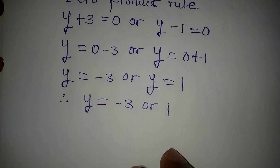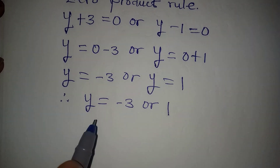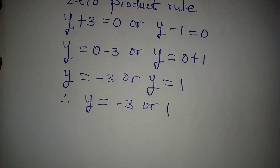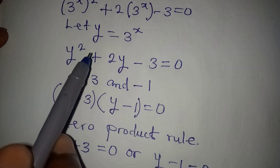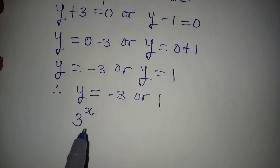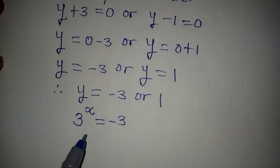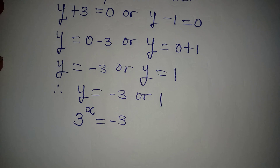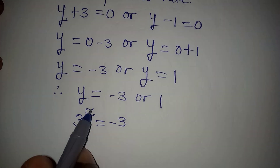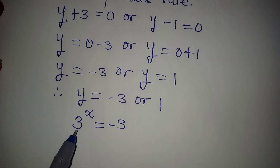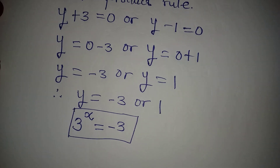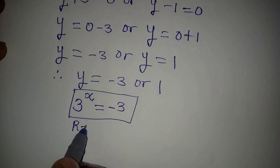I said I will check if these two values satisfy the equation, but we didn't have y in the original equation. Since we need x, remember y equals 3 to the power of x. So in place of y we write 3 to the power of x equals minus 3. There is no value of x that gives you negative 3 — for example, 3 to the power of 0 is 1, 3 to the power of 1 is positive 3, 3 to the power of minus 1 is 1 over 3 — so this must be rejected: no real solution comes from this.